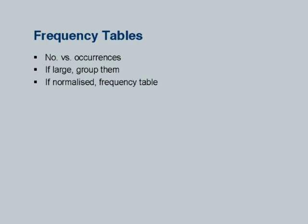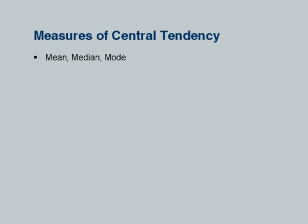If it is normalized it becomes a relative frequency table. I would suggest that you read about this from the textbook — it is described there. We will now discuss the measures of central tendency: mean, median, and mode. This is where we are going to spend the rest of the class.